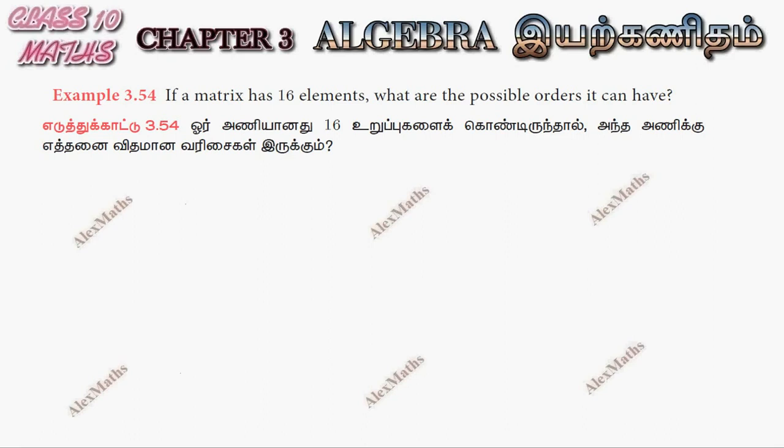Hi students, this is Alex here. Example 3.54. If a matrix has 16 elements, what are the possible orders it can have?